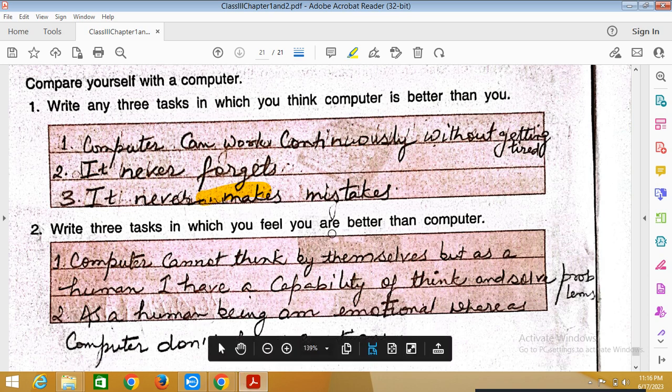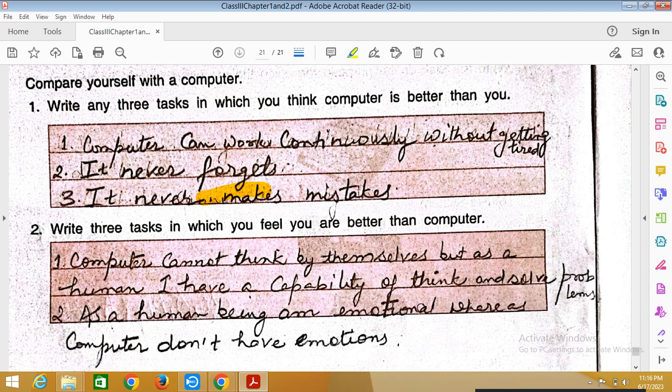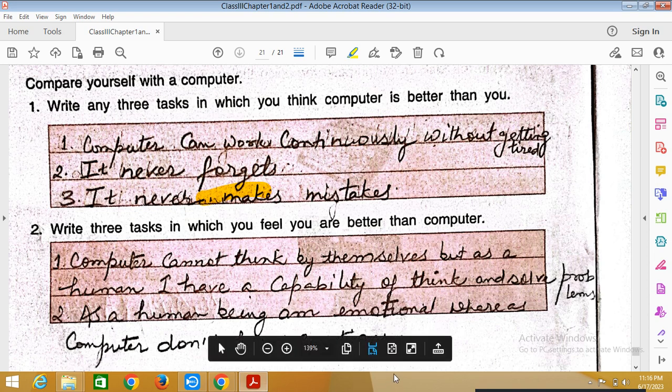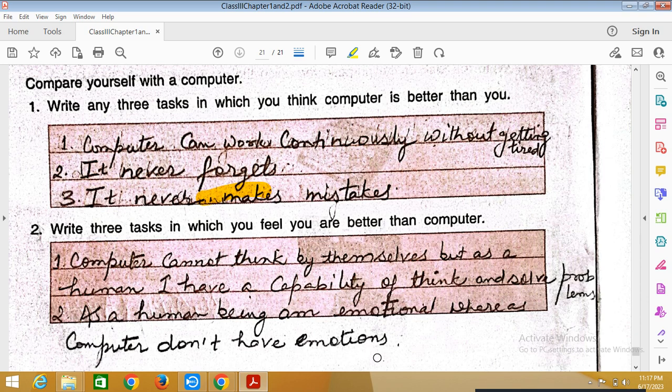Write three tasks in which you feel you are better than computer. First, computer cannot think by themselves, but as human beings we have a capability of thinking and solving problems. As a human being, I am emotional. I have emotions, whereas computer doesn't have emotions. Third point, you can write it children.